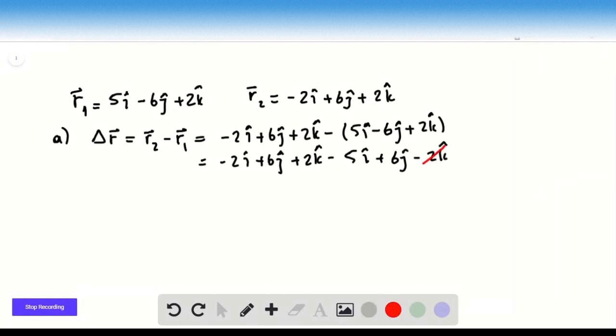As you can see, the 2k-hats are going to cancel each other out. So we have negative 7i-hat plus 6 plus 6 is 12j-hat for the displacement vector. And in part B,